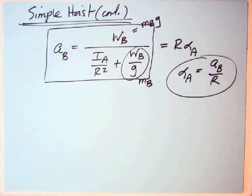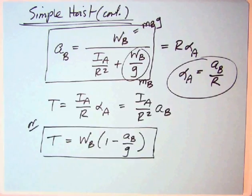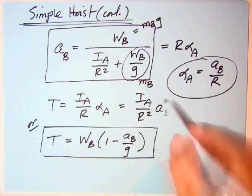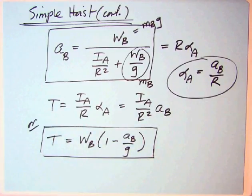If they ask for the tensions, you'd have the following two equations. Using either of the two, you could use this one, looks shorter, IA over R squared times AB that you've just found.